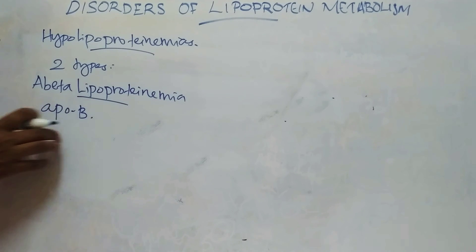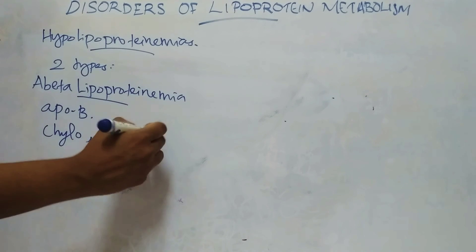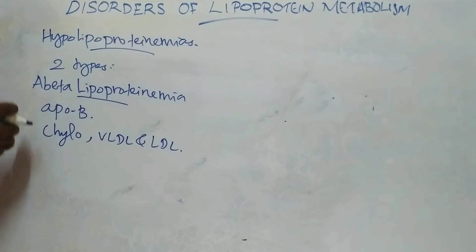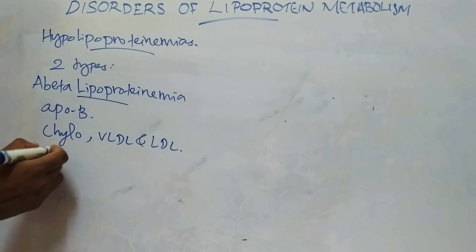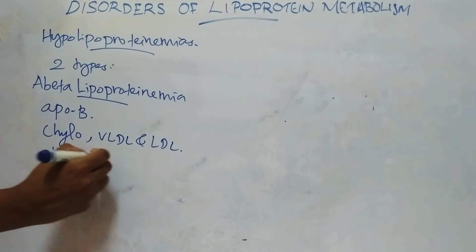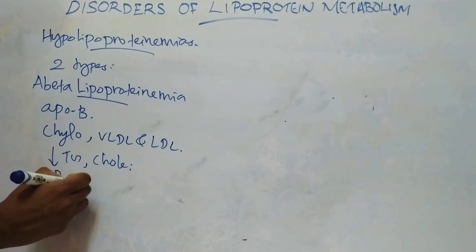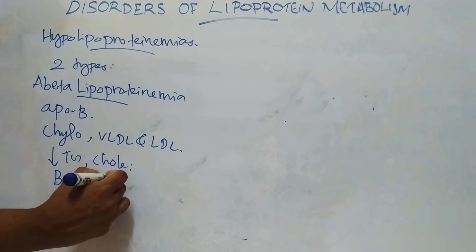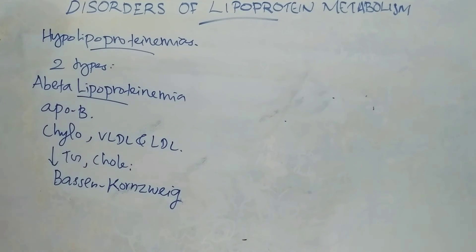The defect in Apo-B synthesis leads to deficiency of Apo-B containing lipoproteins — that is chylomicrons, VLDL, and LDL. It is characterized by decreased cholesterol and triacylglycerol. The classic form of this disease is known as Bassen-Kornzweig syndrome.